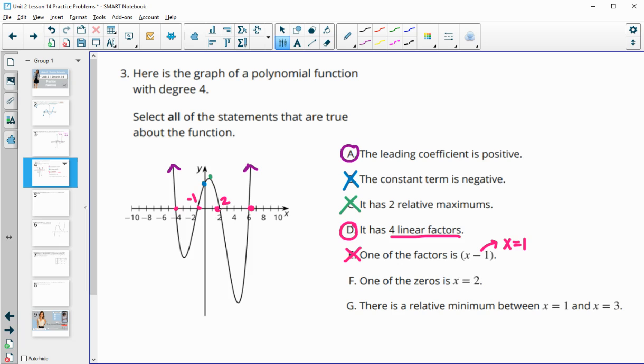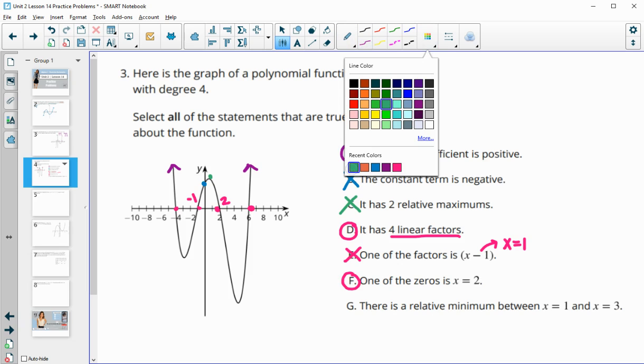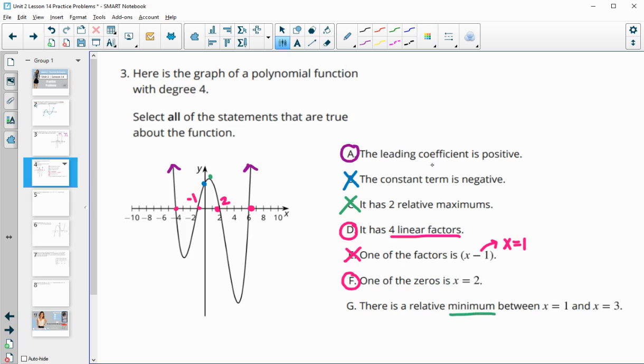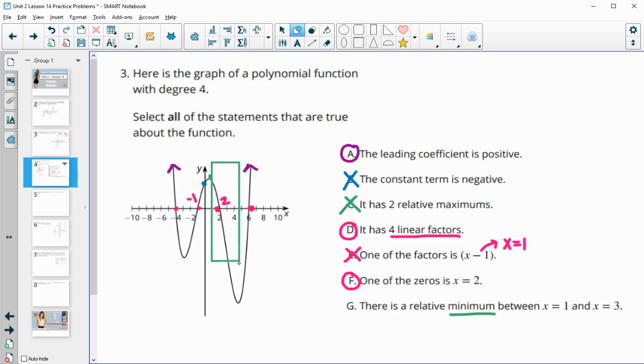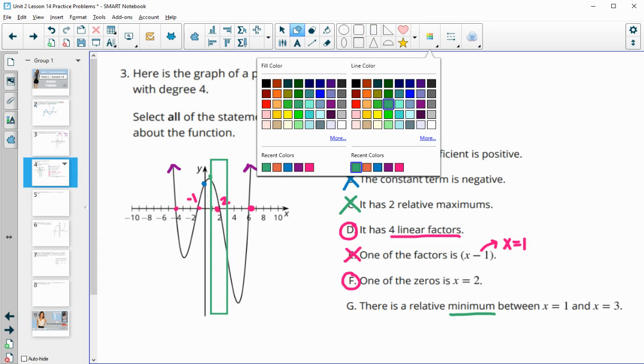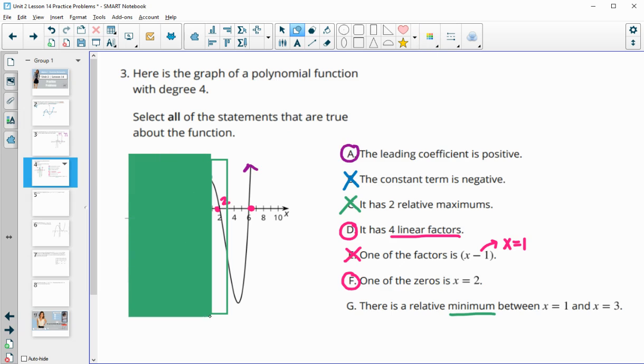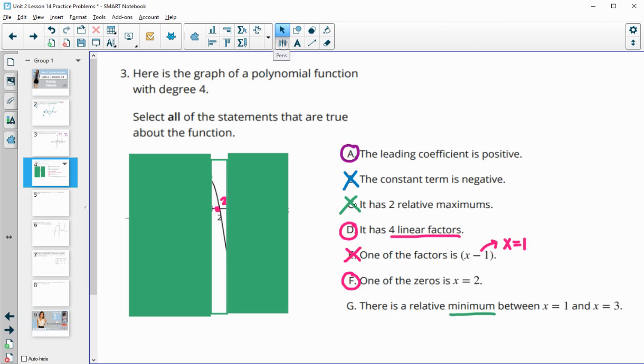One of the zeros is at x equals positive 2. Yes, it's crossing at 2. There is a relative minimum between x equals 1 and x equals 3. Let me draw a box at x equals 1 and x equals 3. Here's the part of the graph between 1 and 3. Is there a relative minimum inside that box? There's not. Do we see a minimum in that section of the graph between x equals 1 and 3? We don't, so this is false.